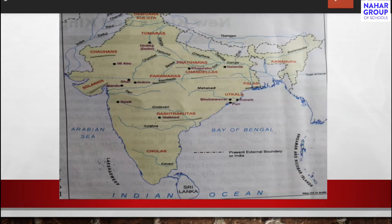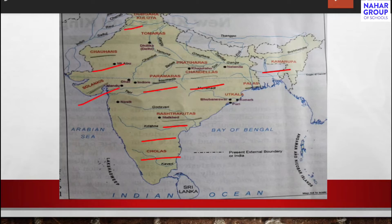Different dynasties emerged in India during this period. The Palas ruled in Bengal and Bihar from the 8th to 12th century. The Gurjara-Pratiharas ruled in Gujarat and Rajasthan. The Rajput clans — Tomaras, Chauhans, Solankis, Paramaras, and Chandelas — were among the most powerful kings of the country.